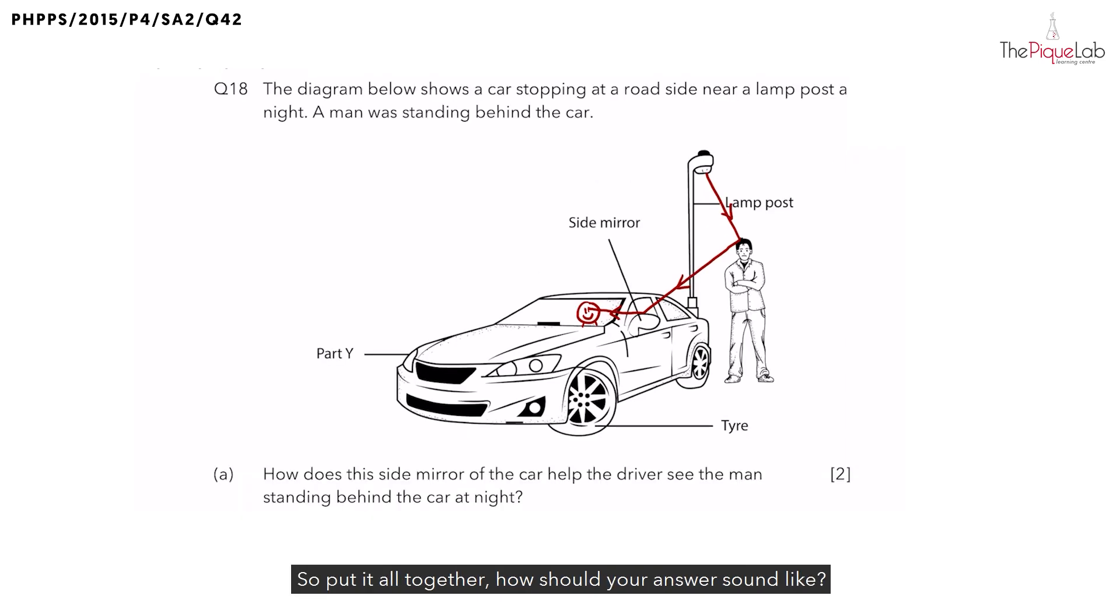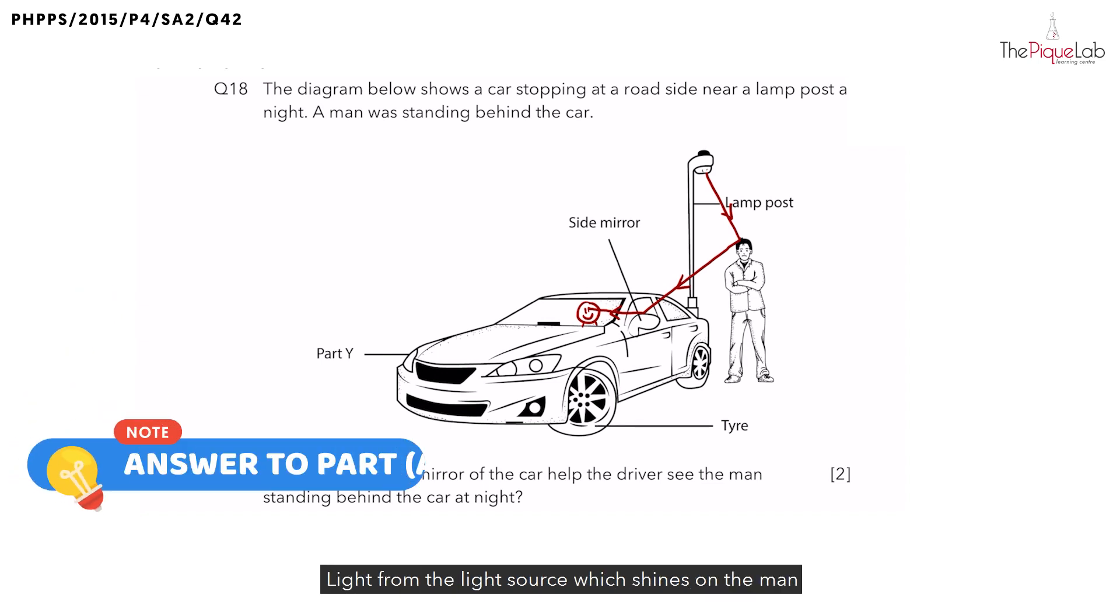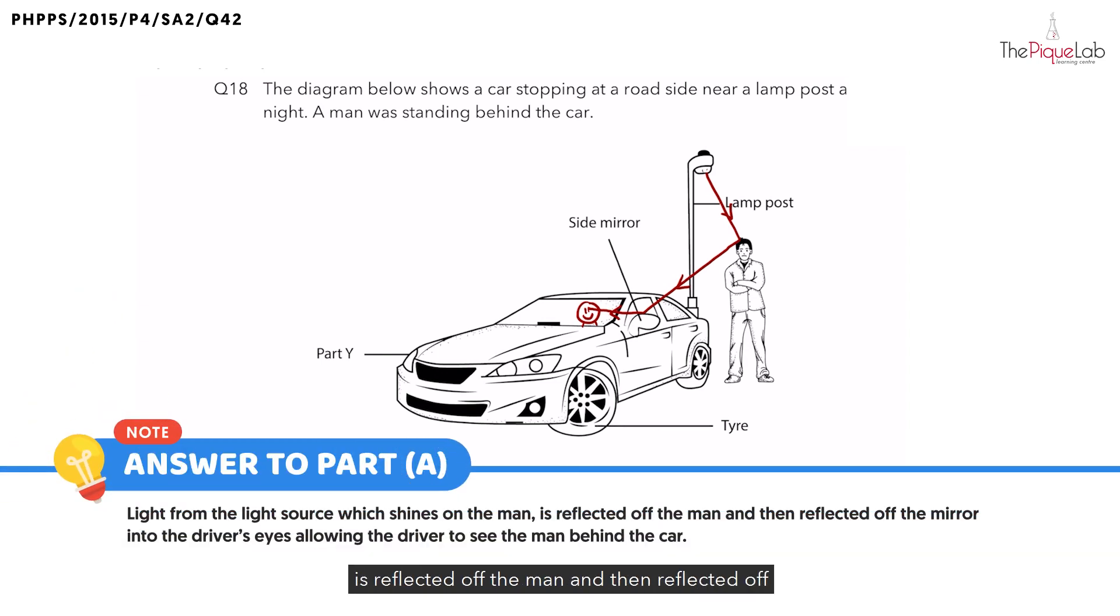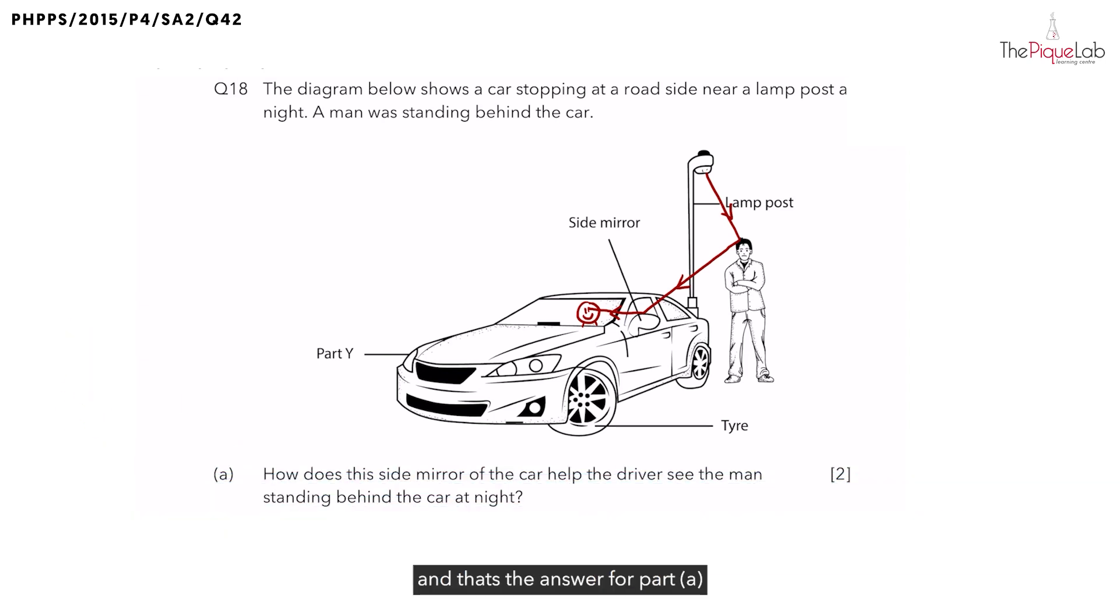It should sound like this, okay? Light from the light source which shines on the man is reflected off the man and then reflected off the mirror into the driver's eyes, allowing the driver to see the man behind the car. And that's the answer for part A.